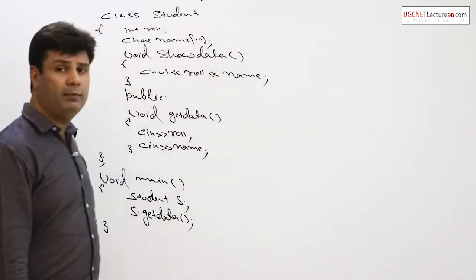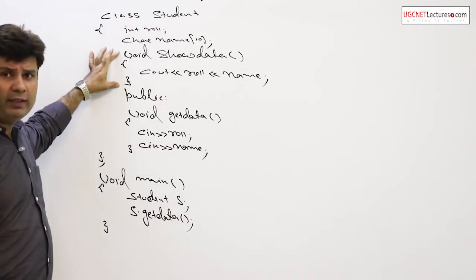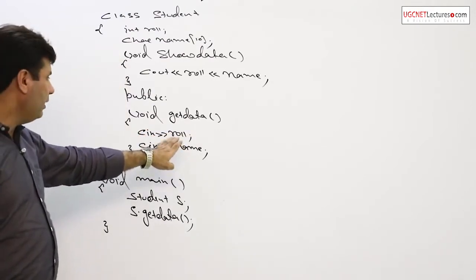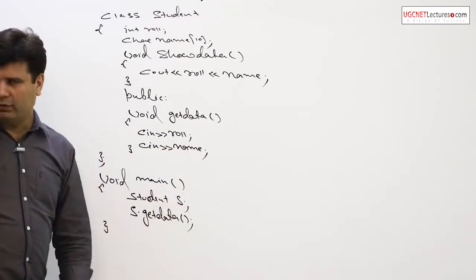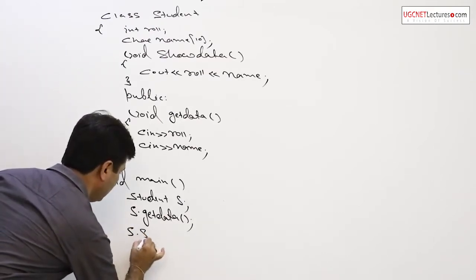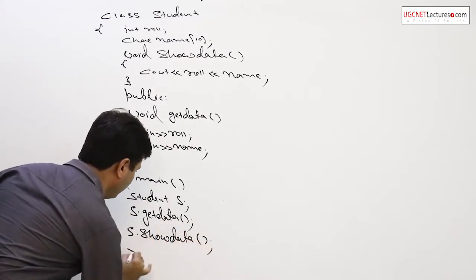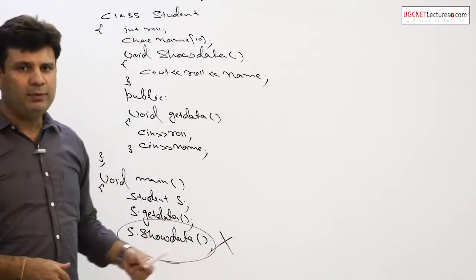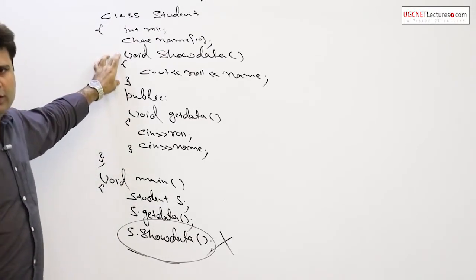Within a class, as in the given example — the same class student with roll number and name — show data is defined privately within the class. In the public section I have defined get data for input and output. In void main, after declaring an object, I am calling s dot get data. If I call s dot show data, the compiler will give an error: not accessible.